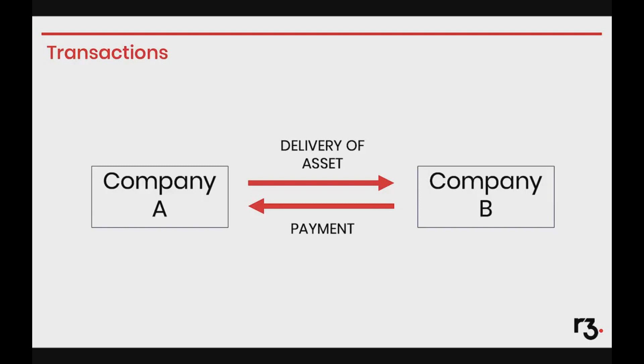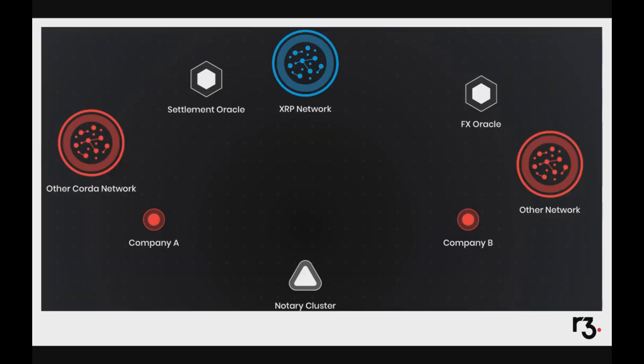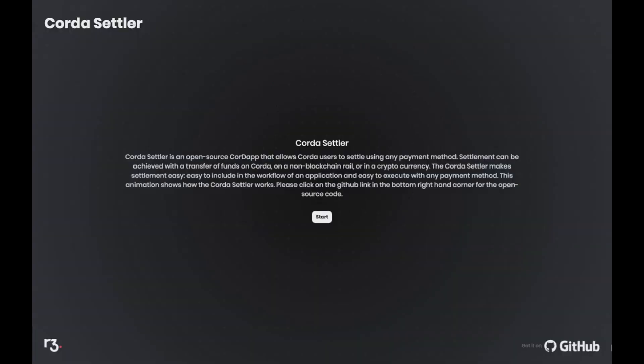If the second leg is not on Corda, it just needs to provide two integration points: one for users to initiate payments and another to confirm payment status. The following animation will show a network of participants using Corda Settler. Company A and Company B are the counterparties. They are using a notary service on Corda, and they both have access to nodes in other payment systems. For this demo, XRP is the chosen payment rail. This animation will be available as a click-through on R3.com.